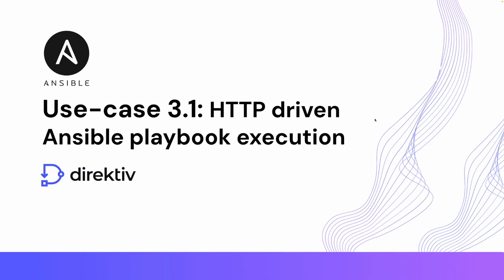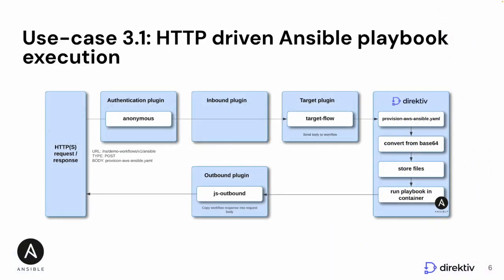If we look at a quick overview of what the workflow is going to look like, or the orchestration policy: our API Gateway is going to receive an HTTPS request. We're going to bypass authentication for now and just allow anonymous login. The request is going to be decomposed and we're going to send the request and the payload — the body, the headers, everything about the request — into a workflow called provision-aws-ansible.yaml.